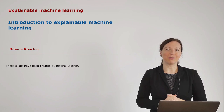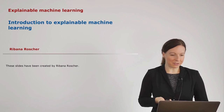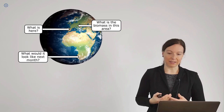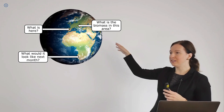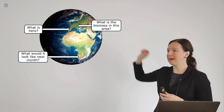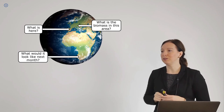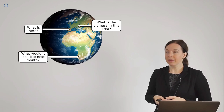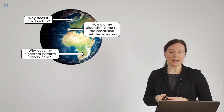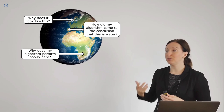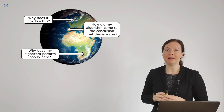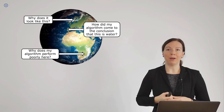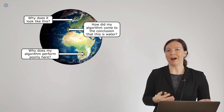Let's get started with the first lecture. I want to start with typical questions we are concerned with in earth observation data analysis. For example, you can ask 'what is here?' which is a classification task, or 'what is the biomass in this area?' which is a regression task, or 'what would it look like next month?' which is a forecasting task. But there are other kinds of questions: 'why does it look like this?' or 'how did my algorithm conclude this is water?' or 'how does my algorithm perform poorly here?' For the rest of the talk, I will focus on these why and how questions, because this is what we do in explainable machine learning.